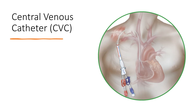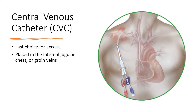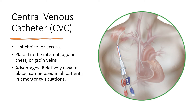The third and final choice of hemodialysis access is a central venous catheter (CVC) — a plastic tube with two lumens that can be placed in the internal jugular vein or the groin. It allows blood to be drawn from the systemic circulation, filtered through the dialysis machine, and returned to the venous circulation. The main advantage is it is relatively easy to place in virtually all patients in emergency situations. The main problem is it is prone to clotting and infection.